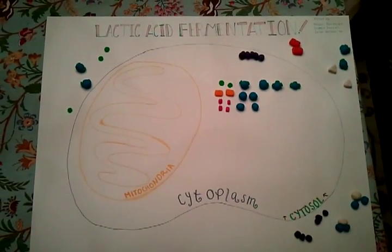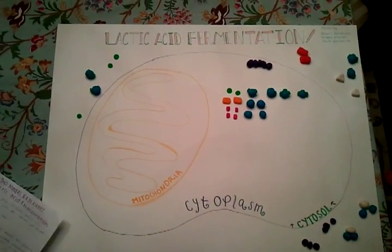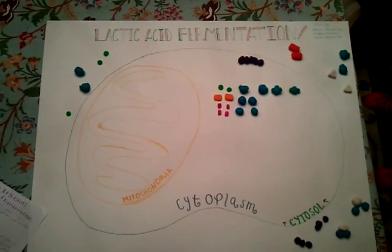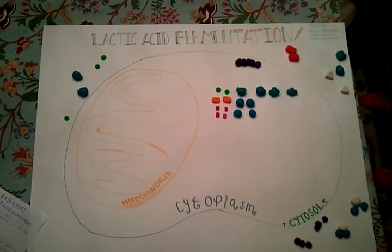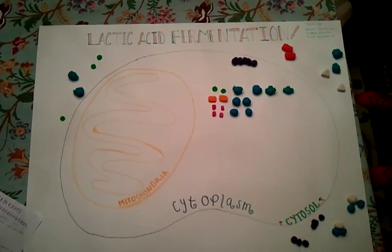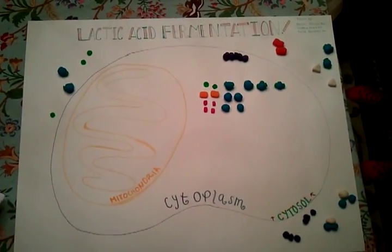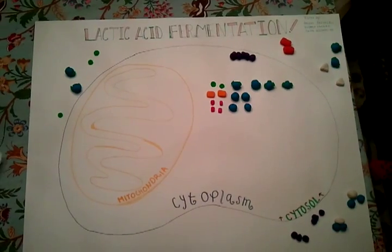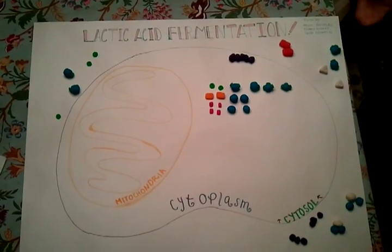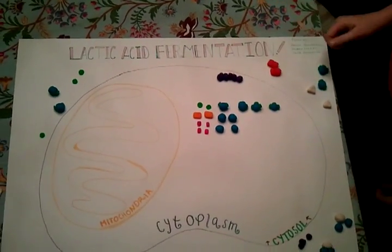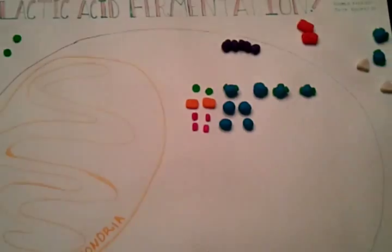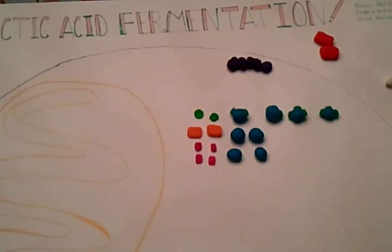This model represents lactic acid fermentation. Before we begin the overall process, it is important to know the molecules and ions that participate. This is glucose, the purple 6-carbon sugar molecule.